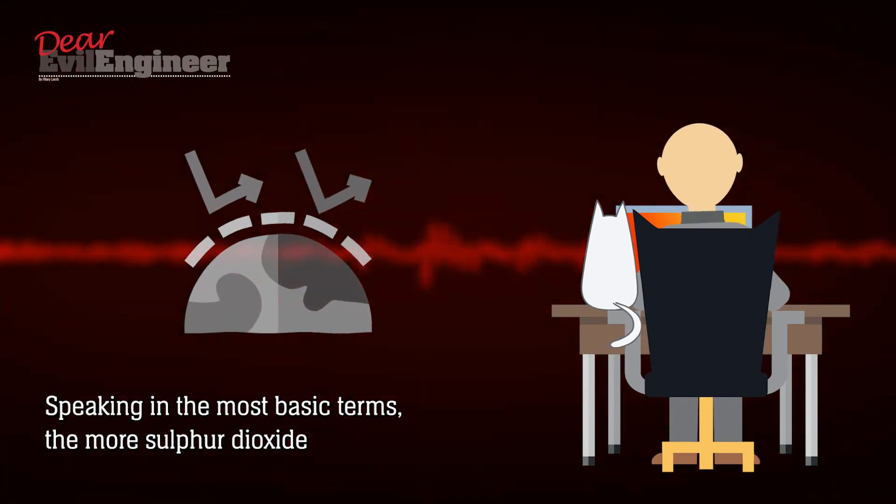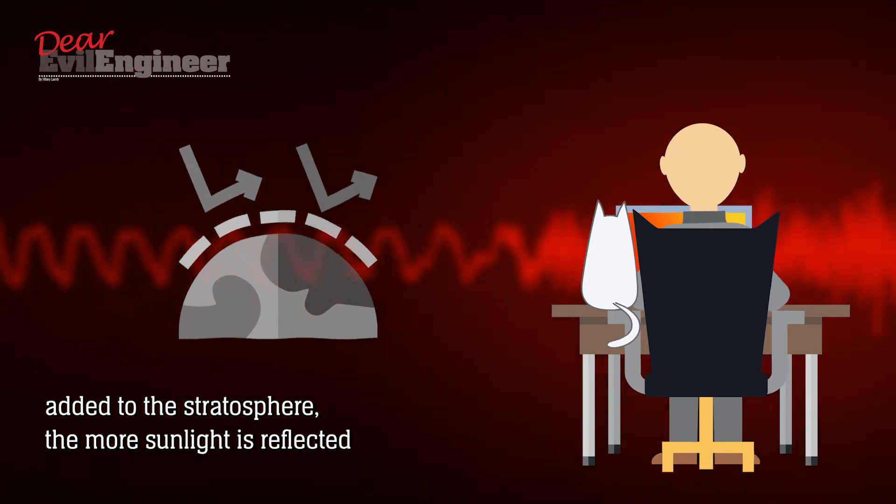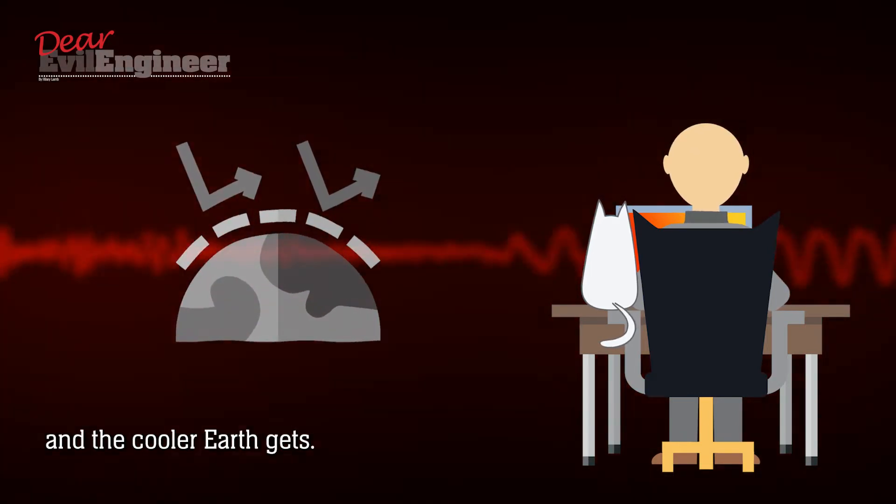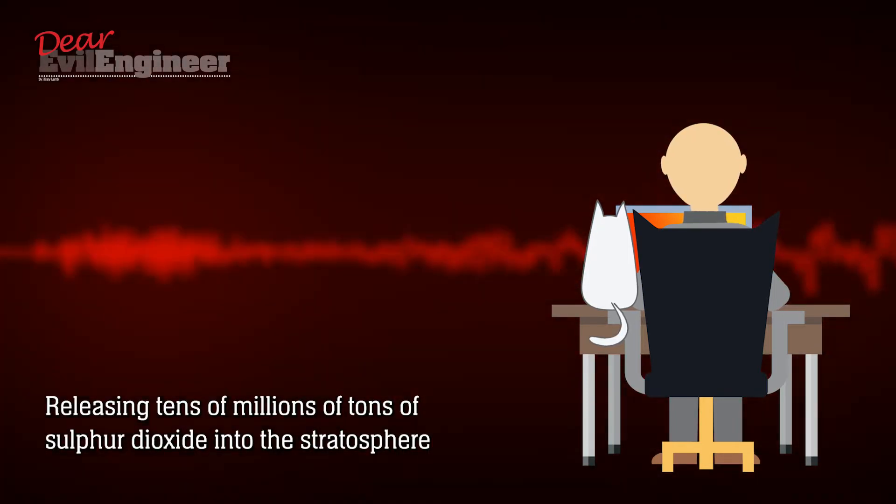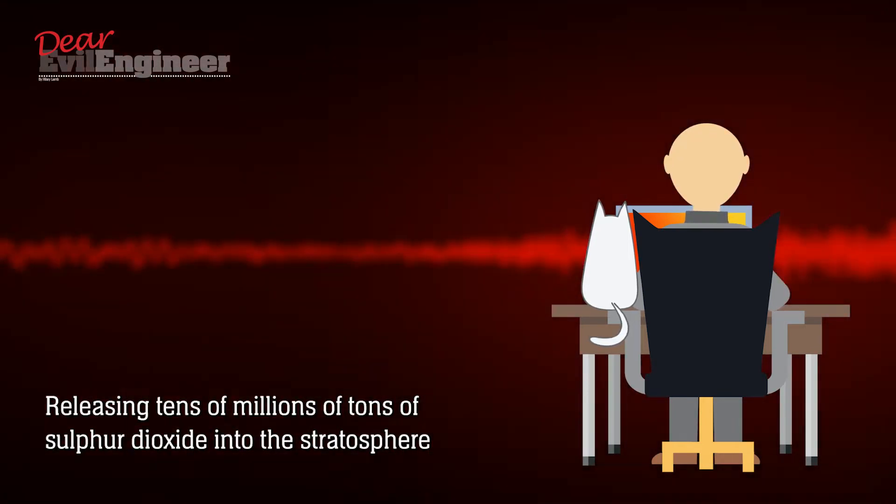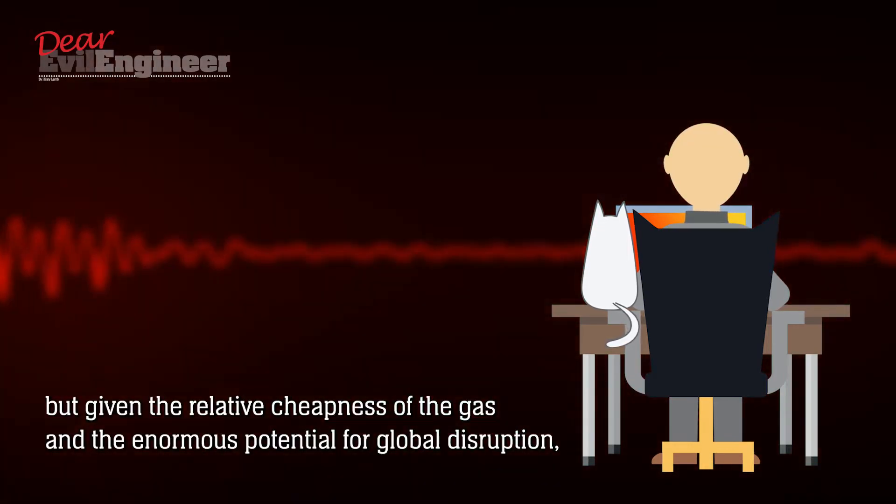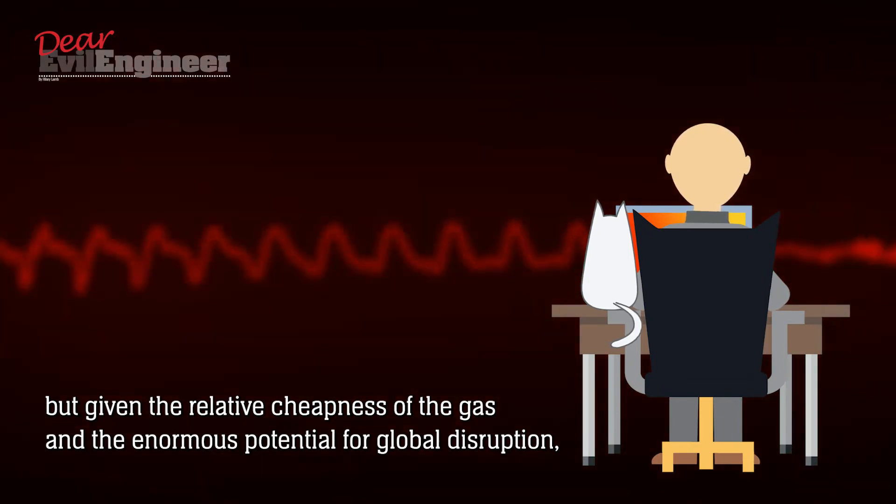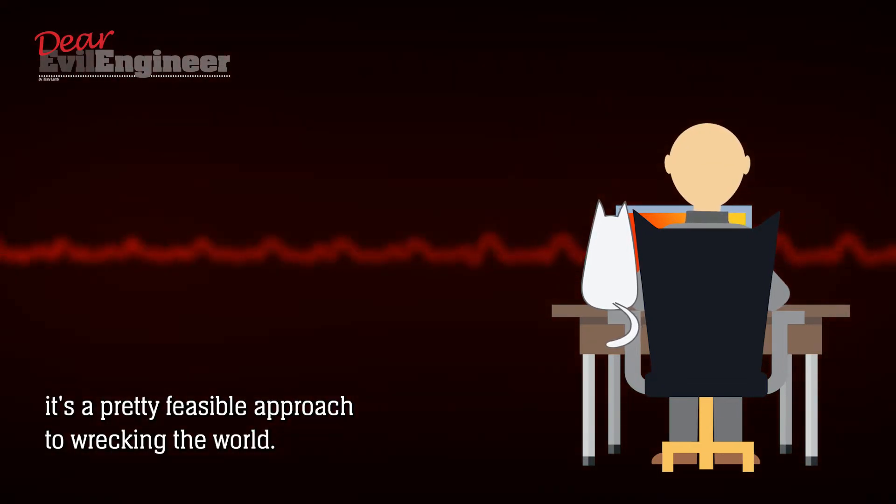Speaking in the most basic terms, the more sulfur dioxide added to the stratosphere, the more sunlight is reflected and the cooler Earth gets. Releasing tens of millions of tons of sulfur dioxide into the stratosphere sounds like a feat, and it is. But given the relative cheapness of the gas and the enormous potential for global disruption, it's a pretty feasible approach to wrecking the world.